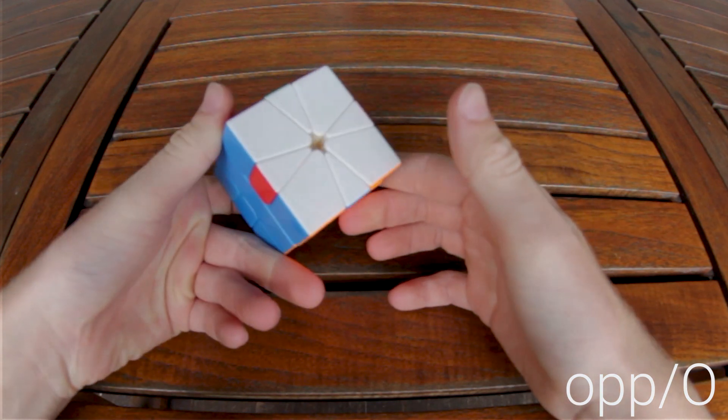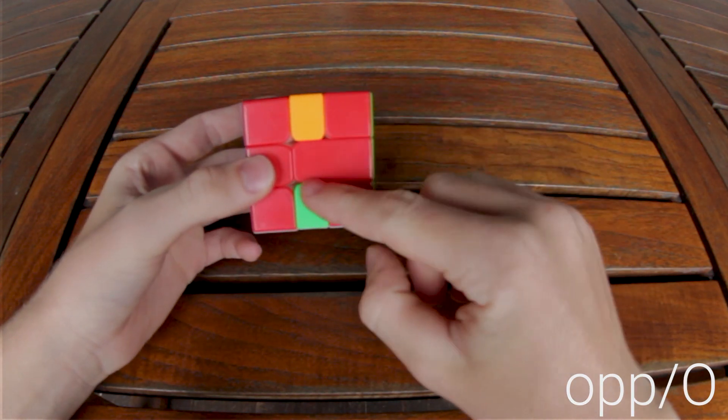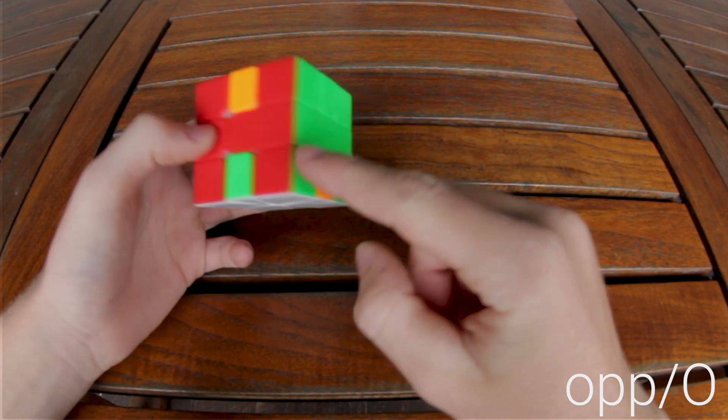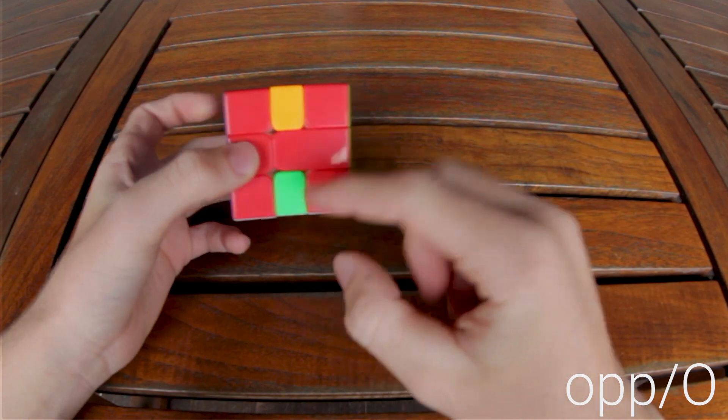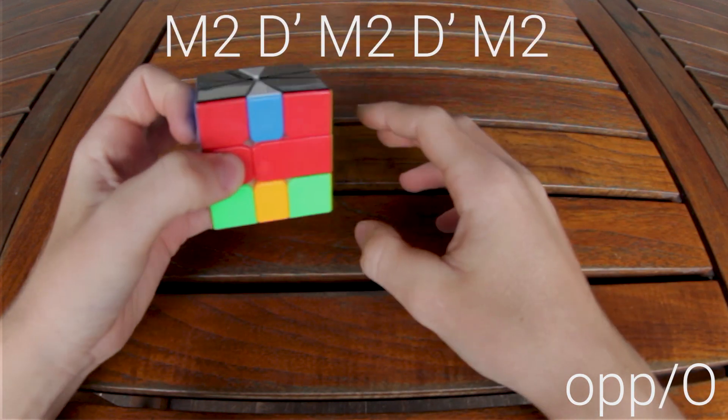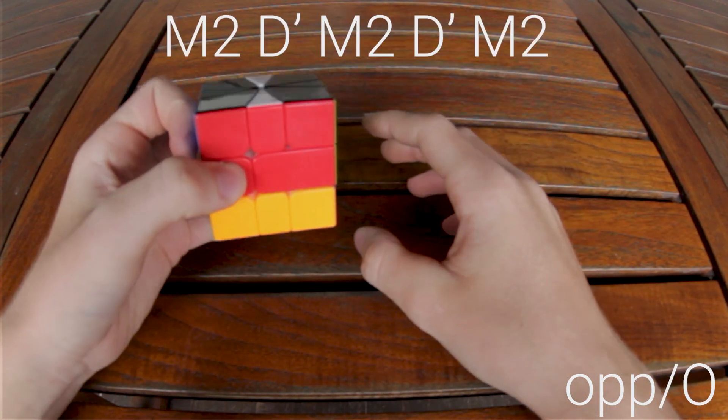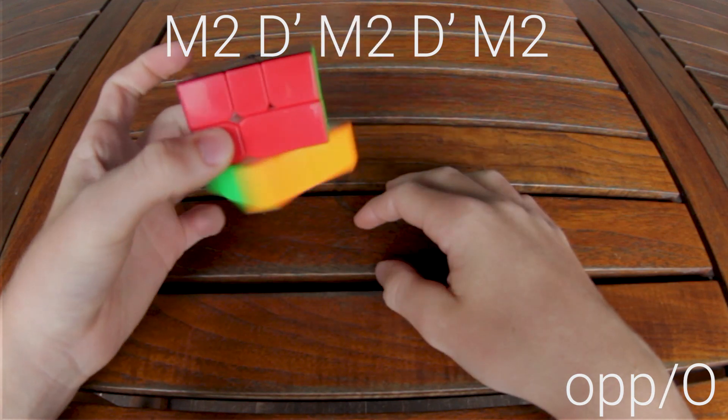If the O perm is on the bottom, check what color the edge is. It's green. Green goes here. So your D move will be going the opposite direction. So M2, D prime, M2, D prime, M2, and ADF.